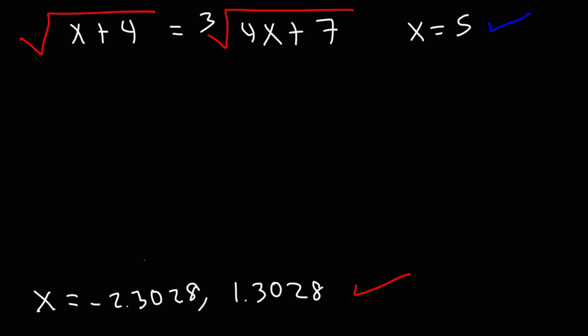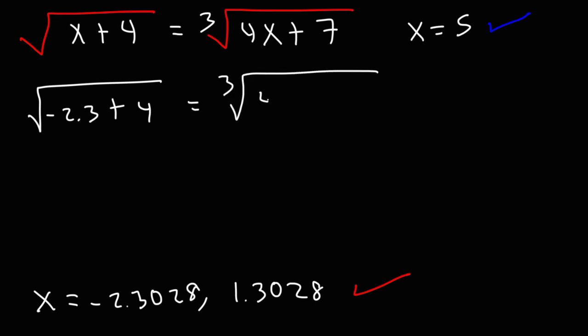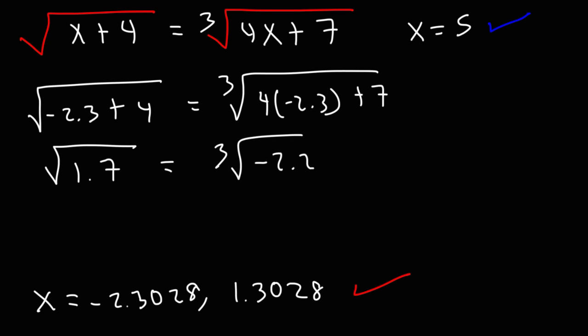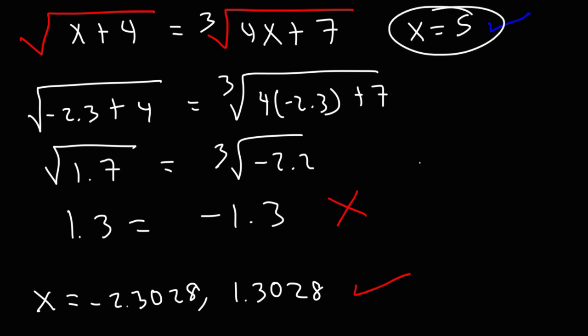Let's check the last one using x approximately negative 2.3. On the left: negative 2.3 plus 4, or 4 minus 2.3, is 1.7, and the square root of 1.7 is about 1.3. On the right: 4 times negative 2.3 is negative 9.2 plus 7, which is negative 2.2, and the cube root of negative 2.2 is negative 1.3. We have a mismatch in signs, so we cannot accept that solution.